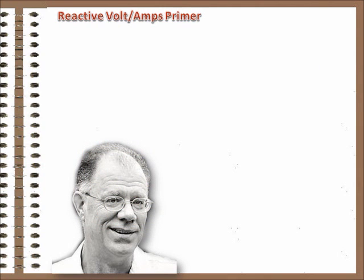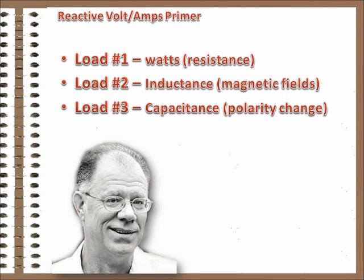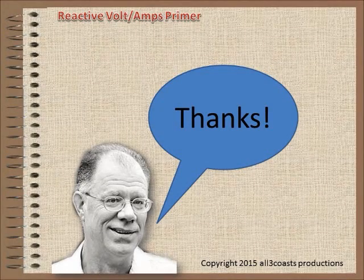So that's the story. Aside from the watts used in your circuits, there are two other types of load: inductive, from the magnetic fields, and capacitive, from the changing polarity, in all AC circuits. These extra loads use capacity, heat up lines, and cause other problems. Your power supplier takes various steps to handle them, but they're a fact of life for your electrical system. Thanks for watching.